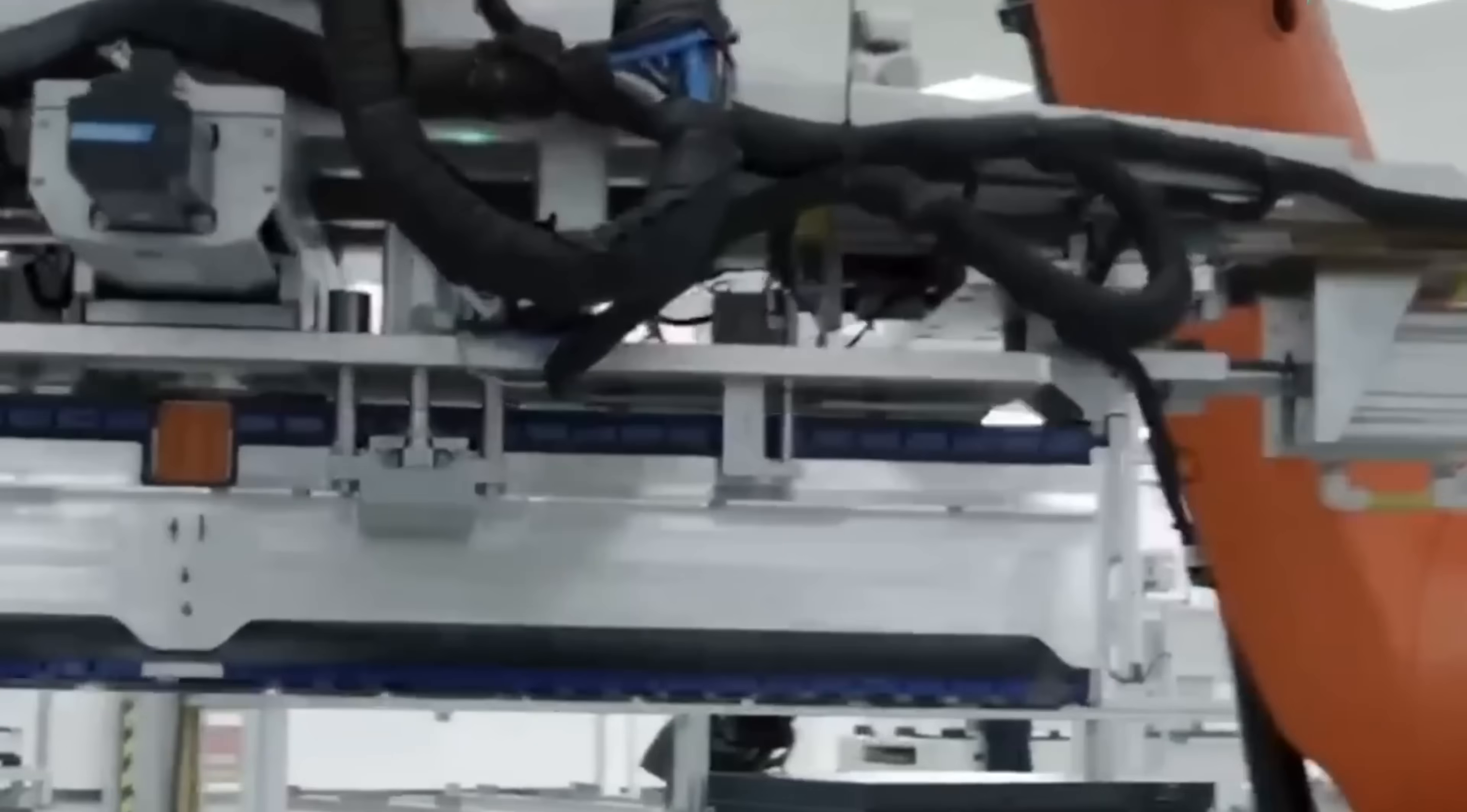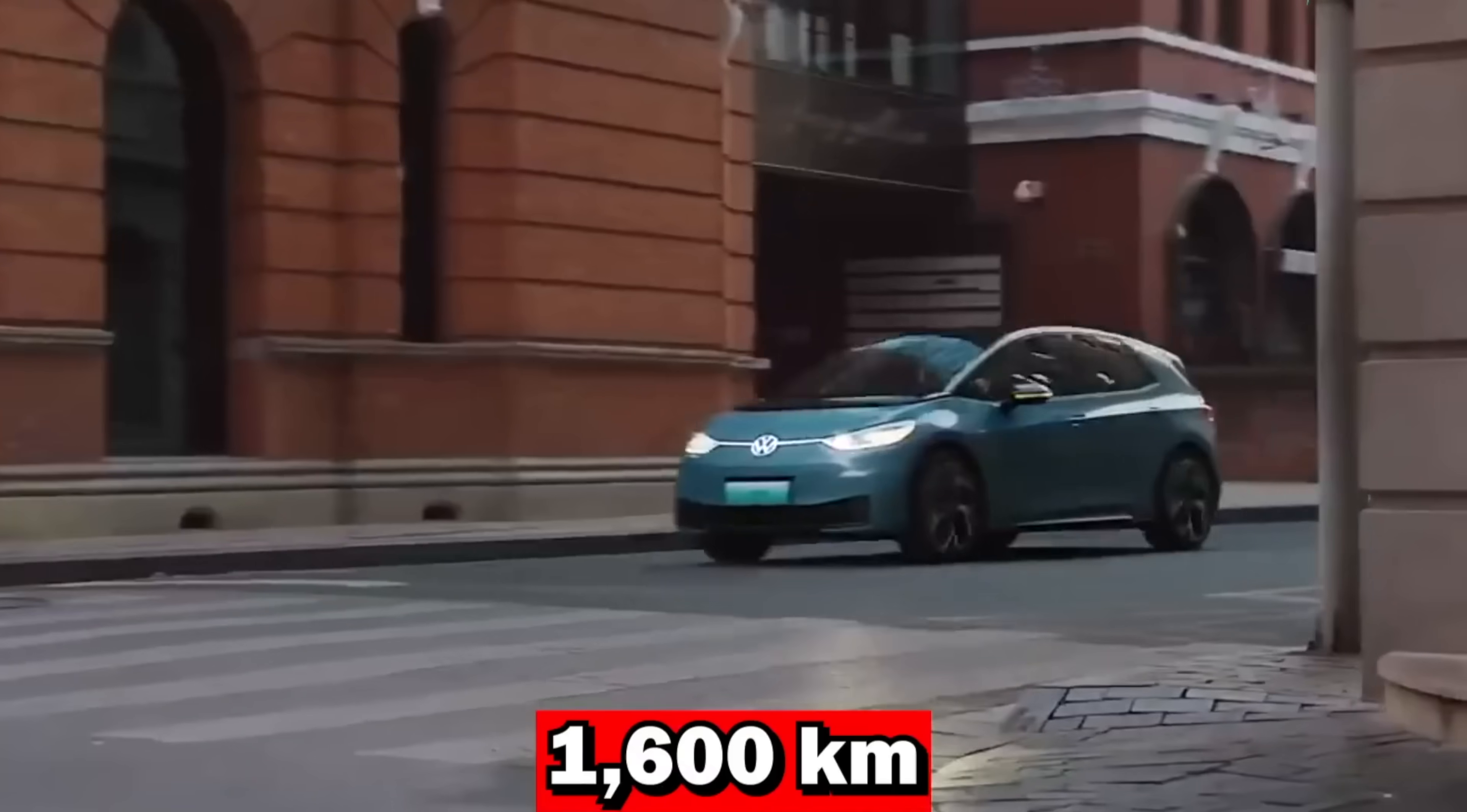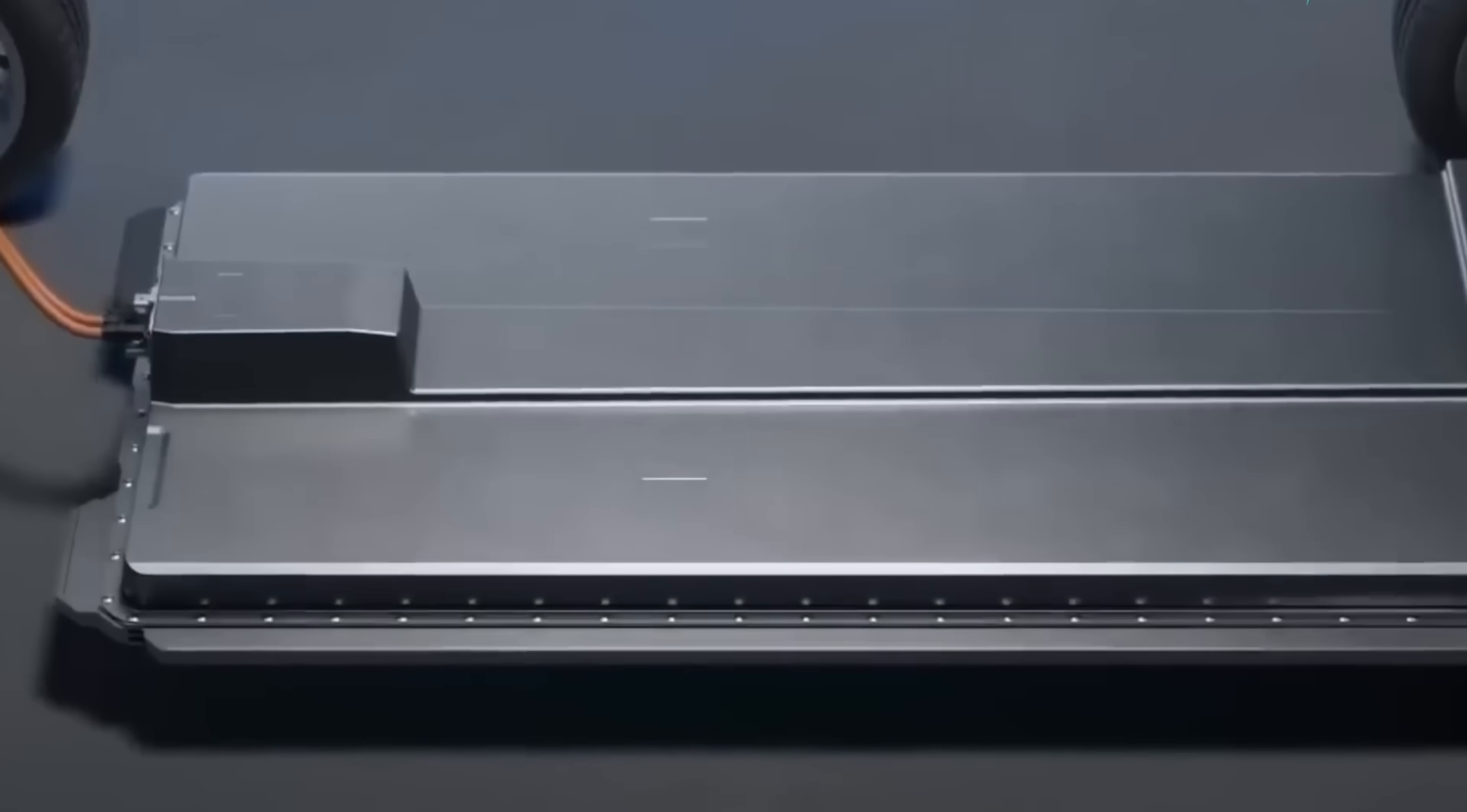But now there's something new. An American company - I did say American company - called 24M Technologies say they found a better way again. They call it electrode-to-pack. And if it works the way that they claim, it could mean EVs with way more than 1,000 miles of range or about 1,600 kilometers of range. Let's jump into it.